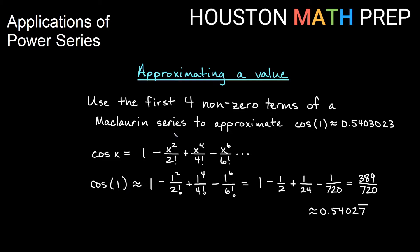McLaurin series are approximations around zero. The value we're plugging into cosine is somewhat close to zero, so that's why we're getting a pretty decent approximation. If we try to approximate cosine of a much larger number far away from zero, then we probably won't get a good approximation unless we take many, many terms. So be careful — if you're using McLaurin, make sure you're approximating a value around zero.